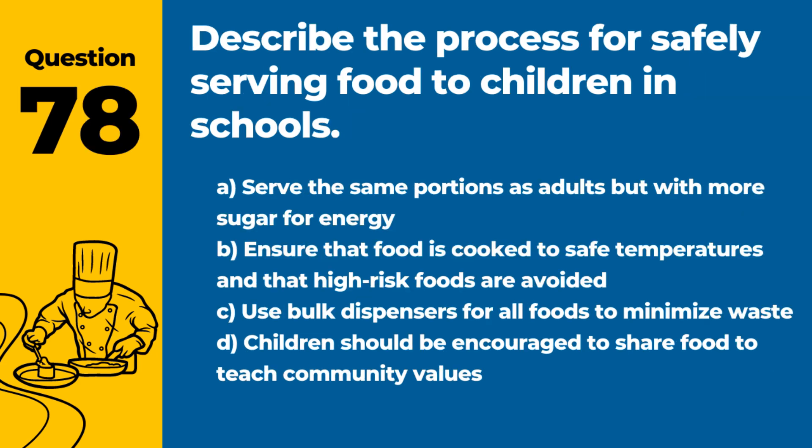Question 78. Describe the process for safely serving food to children in schools. Answer: B. Ensure that food is cooked to safe temperatures and that high-risk foods are avoided. Serving food safely to children involves special considerations to accommodate their vulnerability to foodborne illnesses.